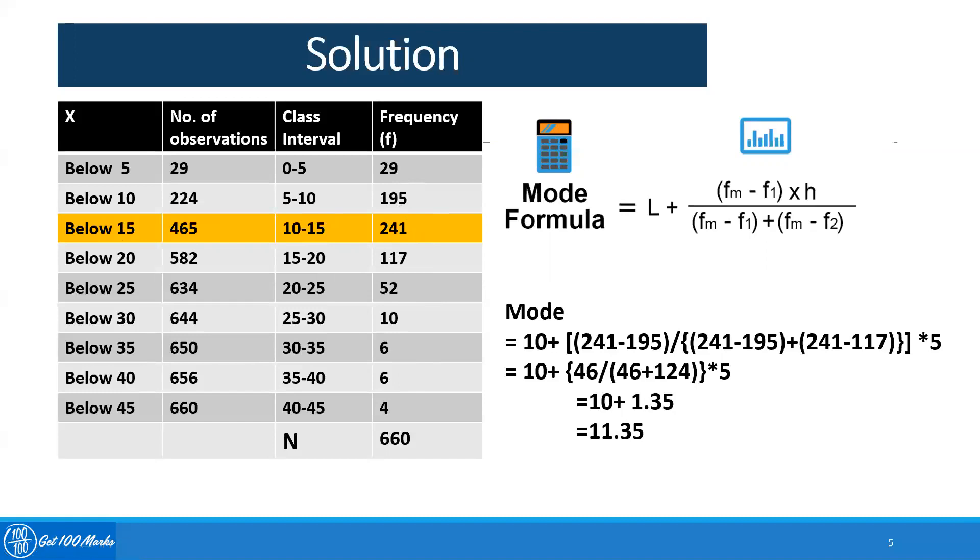So 241 is my Fm and F1 is the previous class frequency, which is 195. And F2 is the following class frequency, which is 117. H is the common width, which is the gap between each class interval, which in our case is 5.